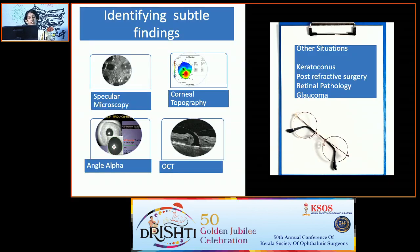In certain situations, specific tests are necessary: specular microscopy to check for corneal guttae, corneal topography to identify subtle keratoconus or increased spherical aberrations, assessment of angle alpha, and OCT to pick up any subtle macular pathology.